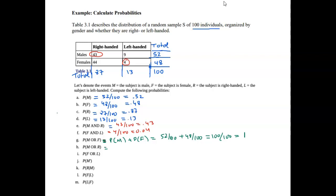For the probability of male or right-handed, there is overlap — 43 individuals are both male and right-handed. Using the addition rule: probability of males plus probability of right-handed minus probability of both. That's 52 plus 87 minus 43, all over 100. Since 52 minus 43 is 9, and 87 plus 9 is 96, the result is 96 over 100, or 0.96.